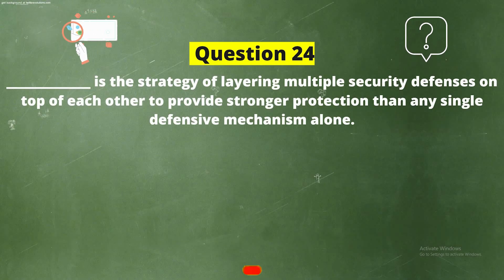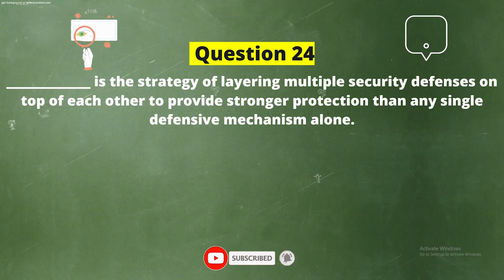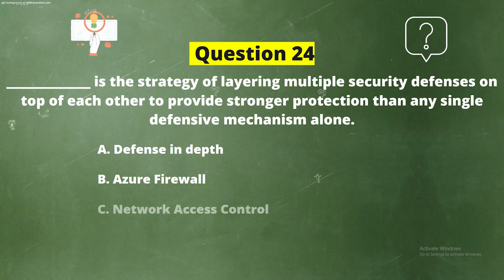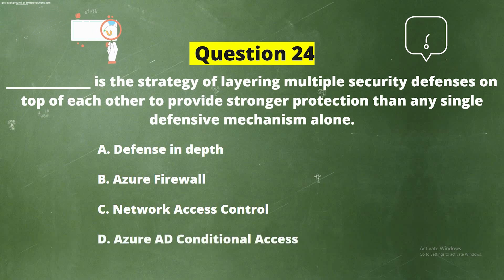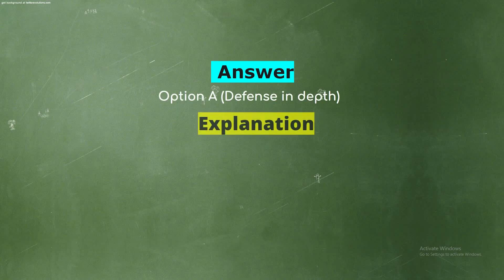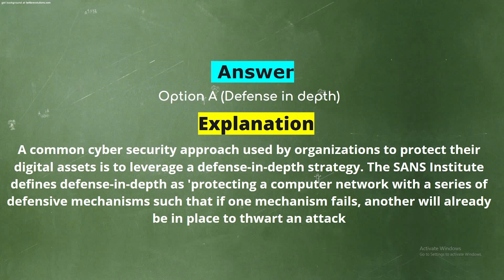Question 24. Fill in the blank: dash is the strategy of layering multiple security defenses on top of each other to provide stronger protection than any single defensive mechanism alone. Option A: Defense in Depth. Option B: Azure Firewall. Option C: Network Access Control. Option D: Azure AD Conditional Access. The correct answer is Option A, Defense in Depth. Explanation: Defense in Depth is a common cybersecurity approach used by organizations to protect their digital assets. The SANS Institute defines it as protecting a computer network with a series of defensive mechanisms such that if one mechanism fails, another will already be in place to thwart an attack.